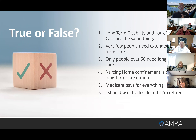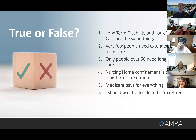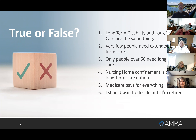We're going to jump in and talk about a lot of things, but first I want to give you a quiz. Nothing I love more than giving a bunch of teachers a pop quiz. True or false: Long-term disability and long-term care are the same thing. True or false: Very few people need extended long-term care, or only people over 50 need long-term care. True or false: Nursing home confinement is the only care option. True or false: Medicare pays for everything. Or: I should just wait until I retire to think about these things. In every situation, the answer is false. We're going to explore these myths and talk about these things from a statistical standpoint.